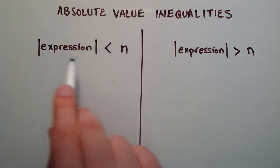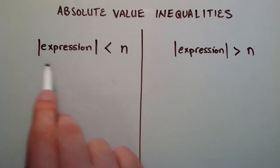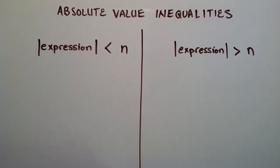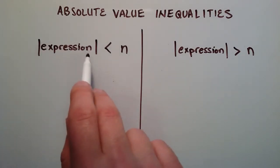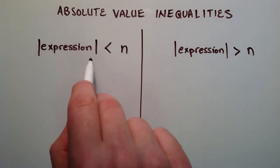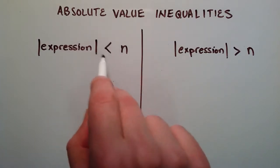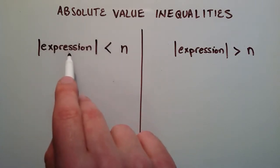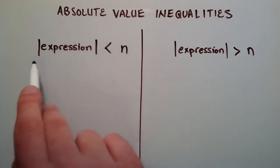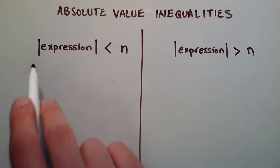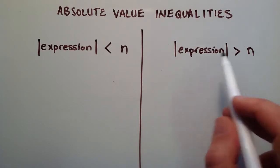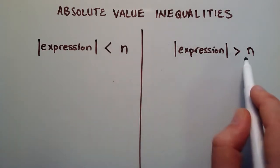On the left hand side we have the absolute value of some expression — an expression can be something like 4x plus 2, or 3x minus 6. We're going to take the absolute value of that and say that it's less than n. In the other case we might have the same type of thing except with a greater than sign instead.